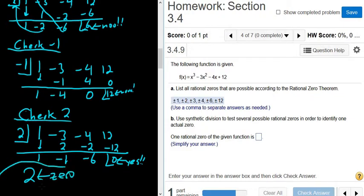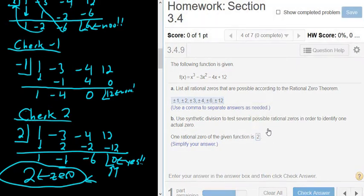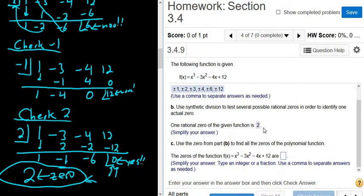So basically, you just keep using synthetic division over and over again until you get 0 as the remainder. When 0 is the remainder, then you know that you have found one of your zeros. Okay, so I'm going to go ahead and type in 2. Beautiful stuff. It says, use the 0 from part B to find all of the zeros of the polynomial function.